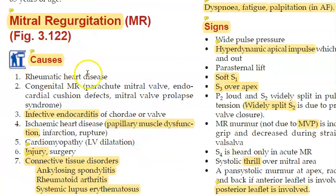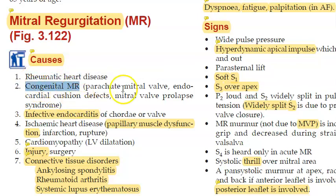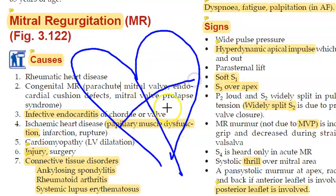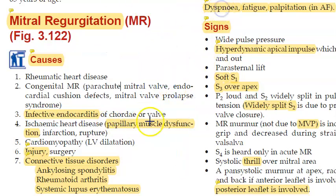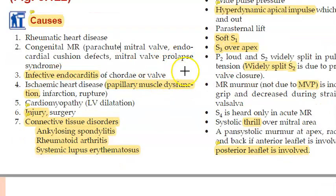For chronic MR, the causes include rheumatic heart disease, congenital mitral regurgitation, infective endocarditis, and papillary muscle dysfunction. If the papillary muscles are weak, the mitral valve will not be strong, leading to mitral regurgitation. Injury and surgery are also similar causes, overlapping with mitral valve prolapse.